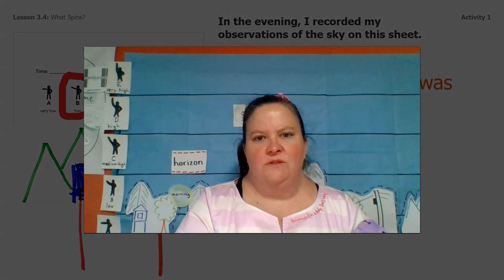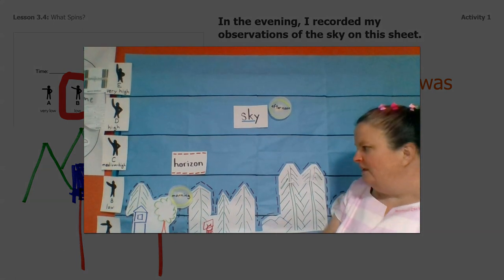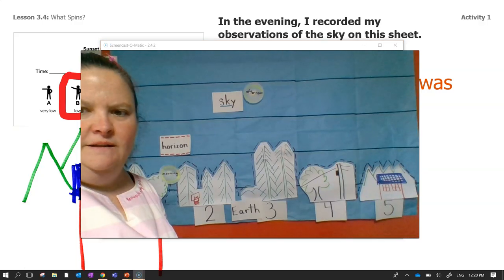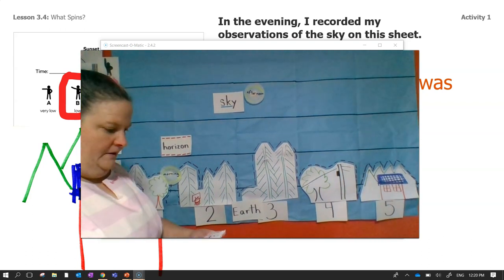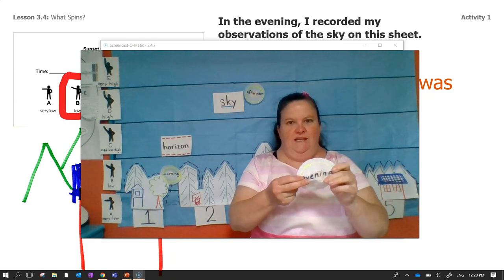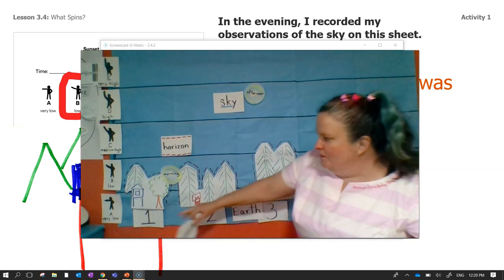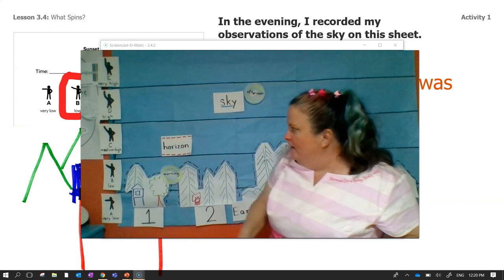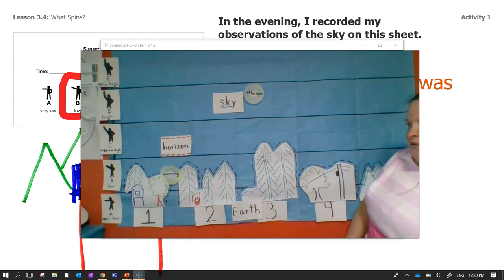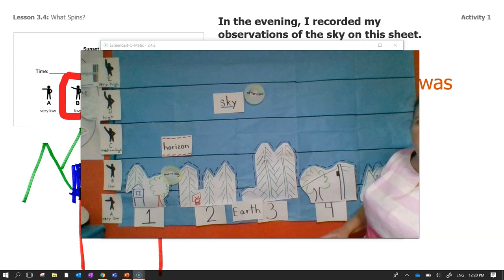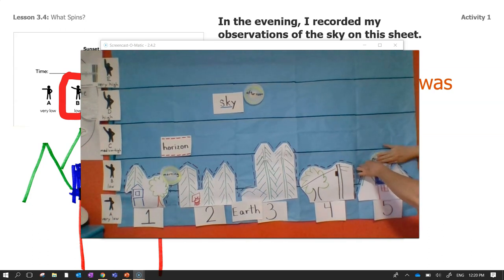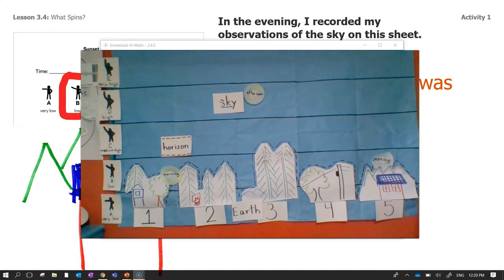Let's figure out where it goes on the sky mural. Was it very low, low, medium high, high, or very high? Yeah, I thought it was low. And where was Mr. Fisk standing — chicken coop, basketball hoop, tall trees? He was over here by the orange house, right?